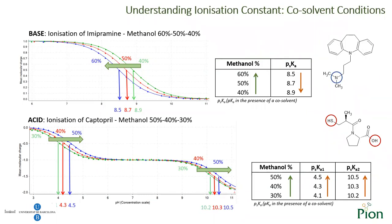It is interesting to observe that the pKa changes in a different direction when comparing both cases. In the case of imipramine, when the percentage of methanol increases, the pKa decreases, while in the case of captopril, when the percentage of methanol increases, both pKas increase. Usually the pKa increases with decrease of solvent percentage for bases, while acids behave in the opposite way. To determine the pKa in water, an extrapolation to aqueous conditions needs to be performed. At Pion, we use the Yasuda-Shetlovsky and linear extrapolation equations to obtain the pKa in water.